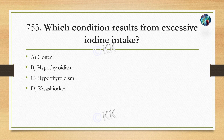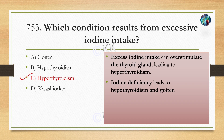Which condition results from excessive iodine intake? Option A: Goiter, Option B: Hypothyroidism, Option C: Hyperthyroidism, Option D: (other). The correct answer is Option C, Hyperthyroidism. Excessive iodine intake can cause over-stimulation of the thyroid gland, leading to hyperthyroidism. Conversely, low iodine intake due to iodine deficiency can cause hypothyroidism, and goiter can also be seen.